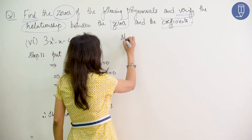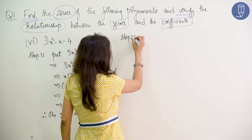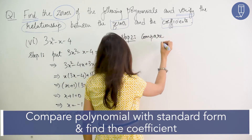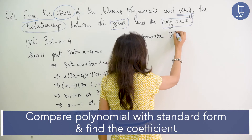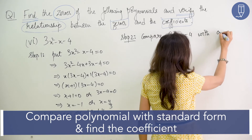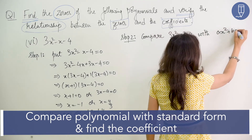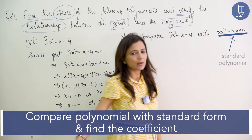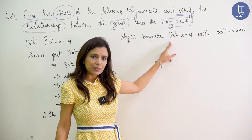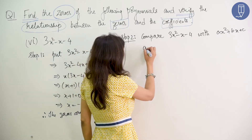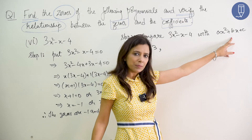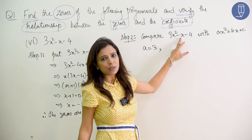Step 2: coefficients. We will compare the polynomial with the standard polynomial ax squared plus bx plus c. The coefficient of x squared is a; here it is 3, so a equals 3. The coefficient of x is b; here it is minus 1, so b equals minus 1.